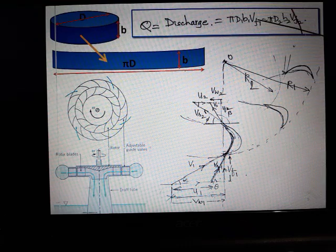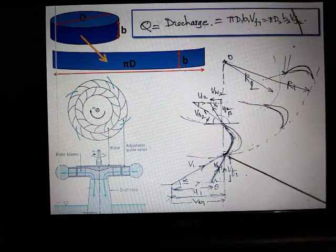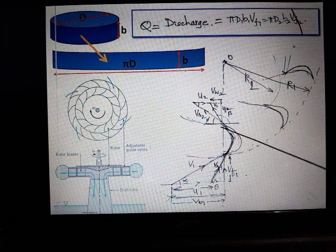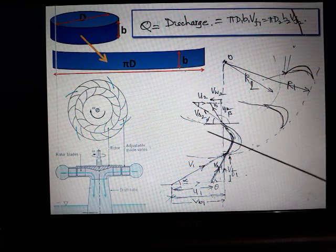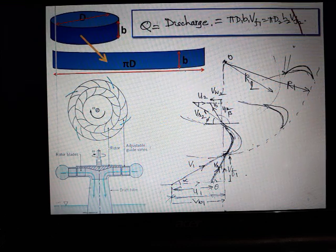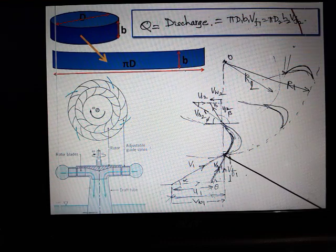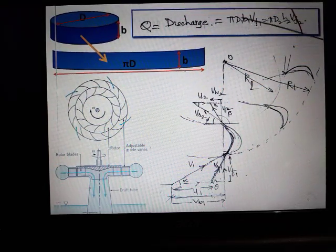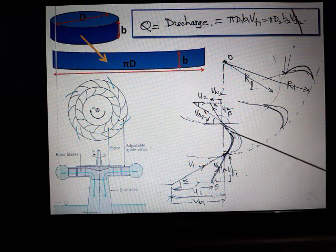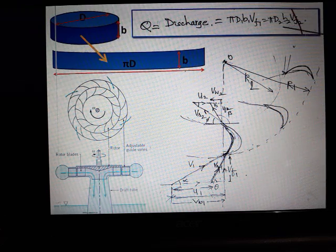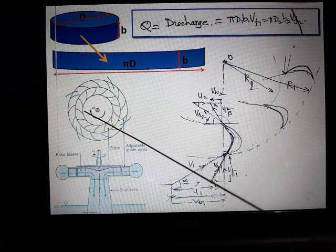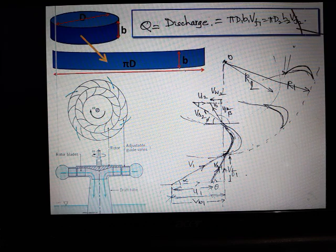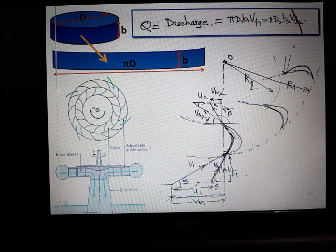This particular thing is at the entry outer level; this is at the exit inside. This is the velocity triangle at the outlet; this is the velocity triangle at the inlet. Area multiplied by this velocity gives you the discharge, so Q equals πD1B1 times Vf1. The same discharge has to go out, so πD2B2 times Vf2, where D2 is the inside diameter.